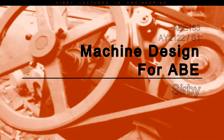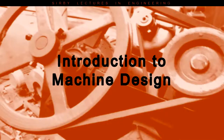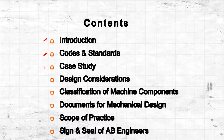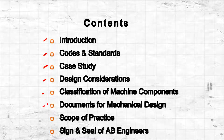This is our first topic for the course in ABE 153, and the title of this topic is Introduction to Machine Design. Before the contents of this presentation, we'll have a brief discussion about agricultural machinery, then codes and standards, case studies, design considerations, classification of machine components, and documents for mechanical designs.